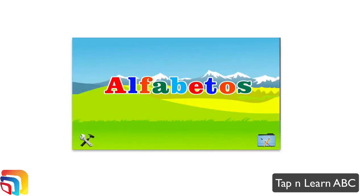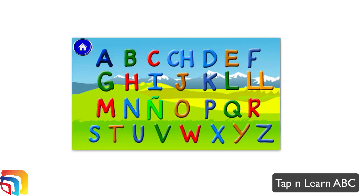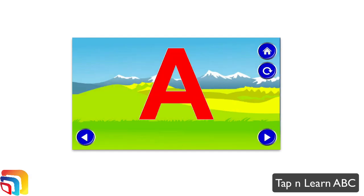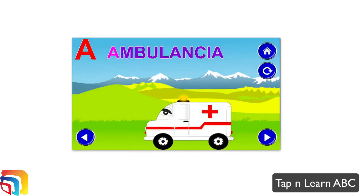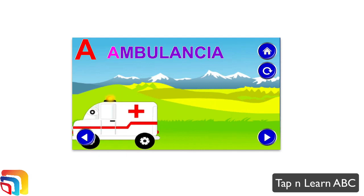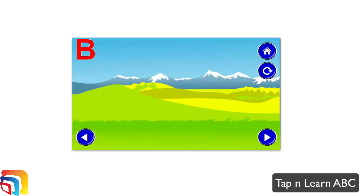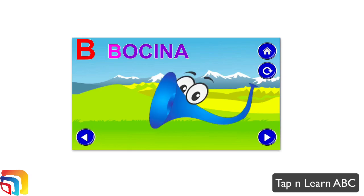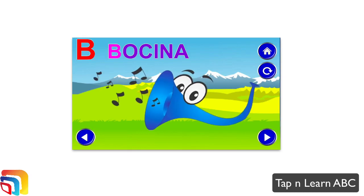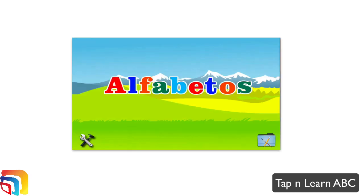We can go into the alphabet here. You can see now the alphabet has been changed to Spanish. It shows the letter, it announces it, and then it pronounces a word with that same letter and gives you an animation. You can cycle through another word here — be, be, como, bocina. All in that language, in this case Spanish.